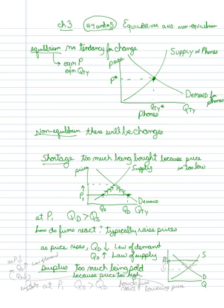And because the price is too high, then what we see here is that, at price P1, let's call this price P1, at price P1, the quantity supplied is greater than the quantity demanded. How do firms react? How do firms react?